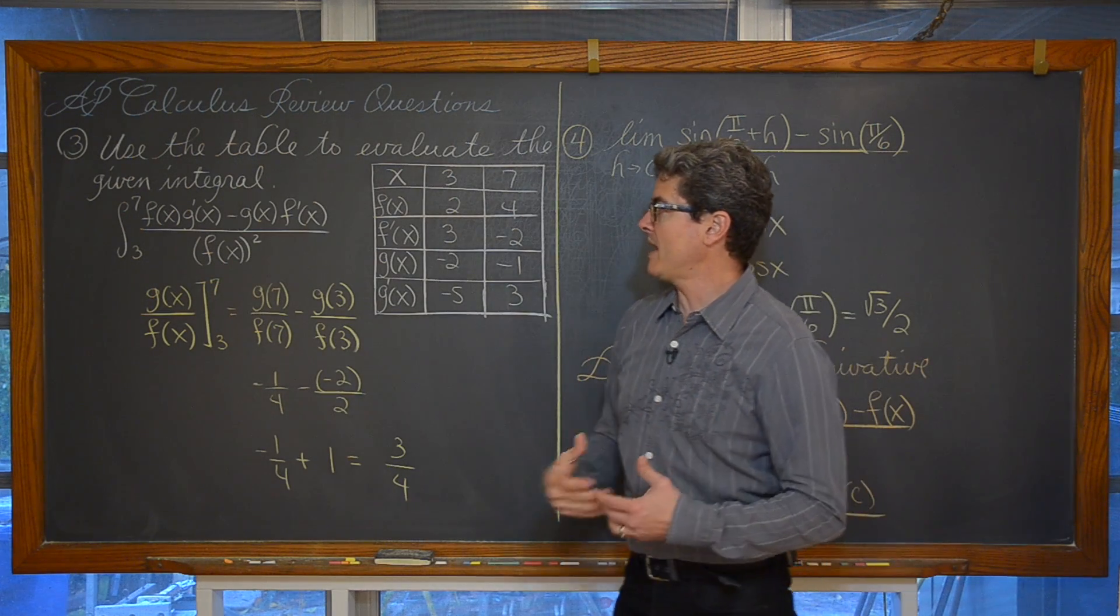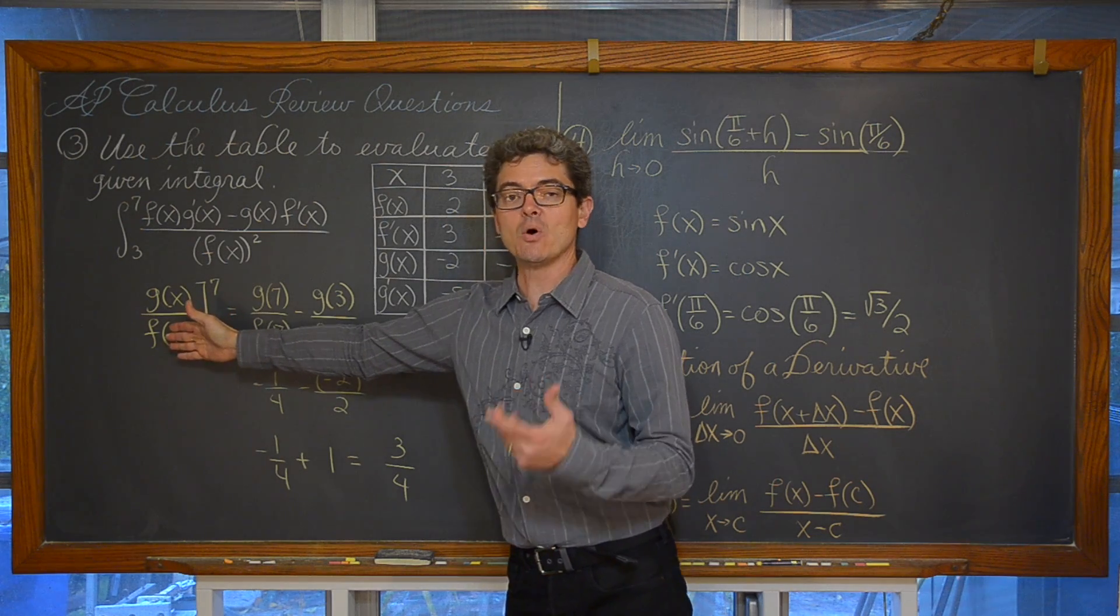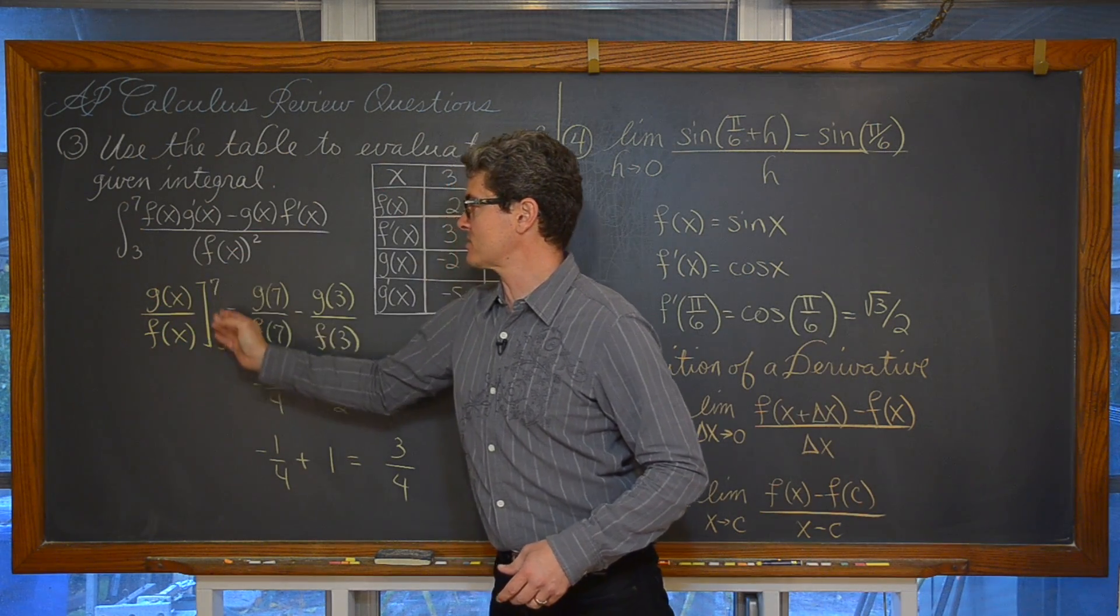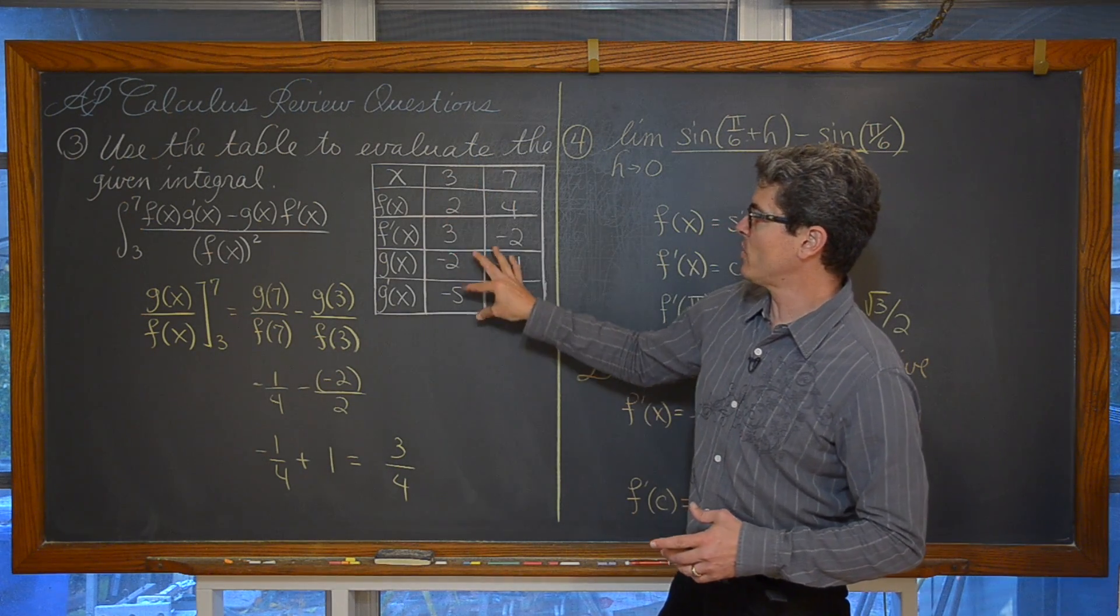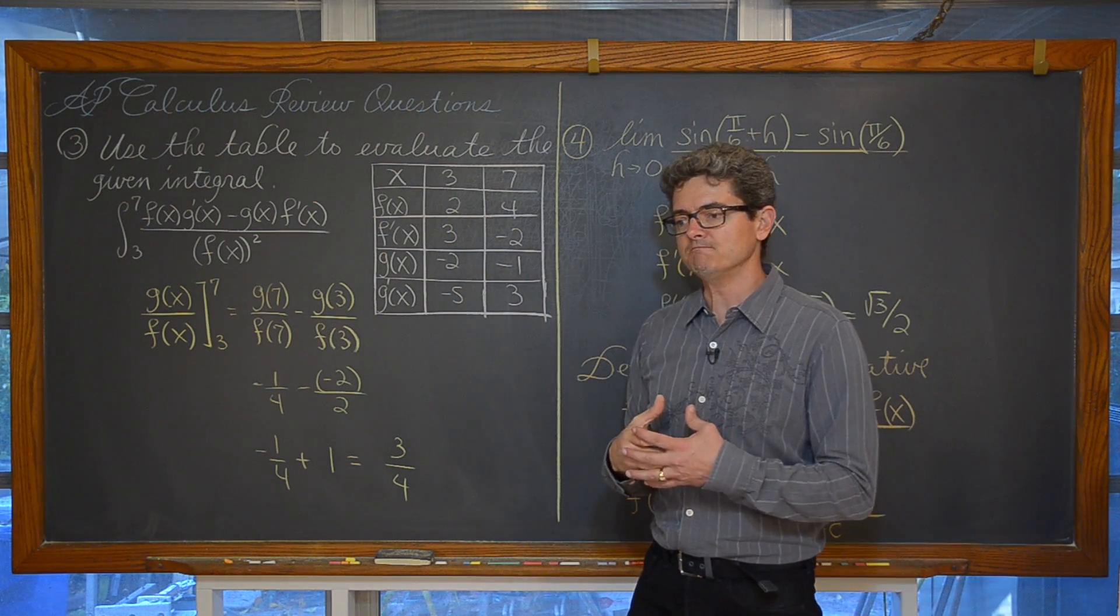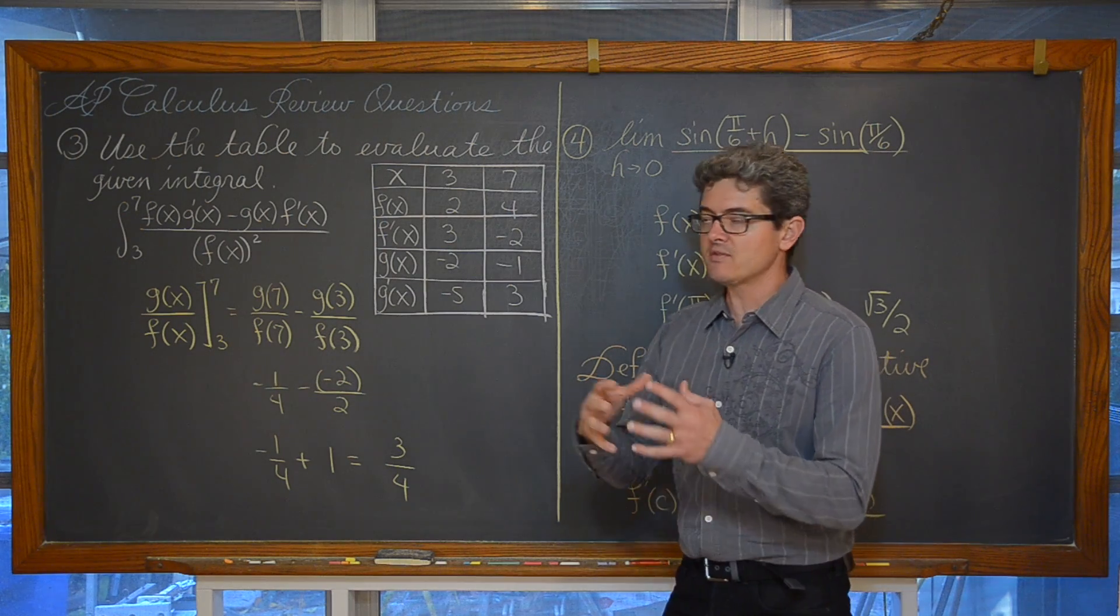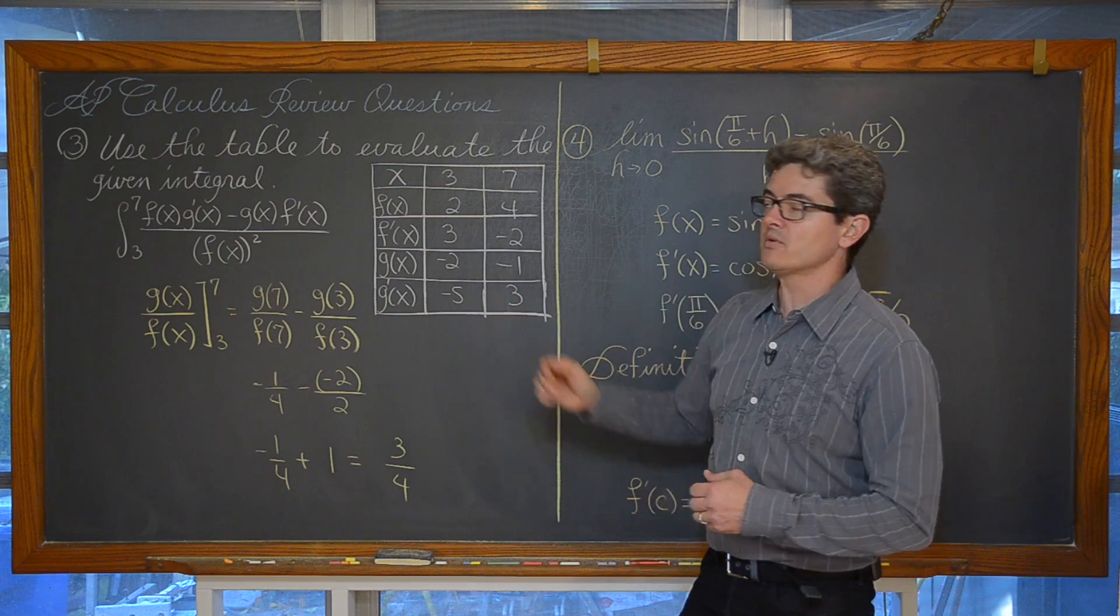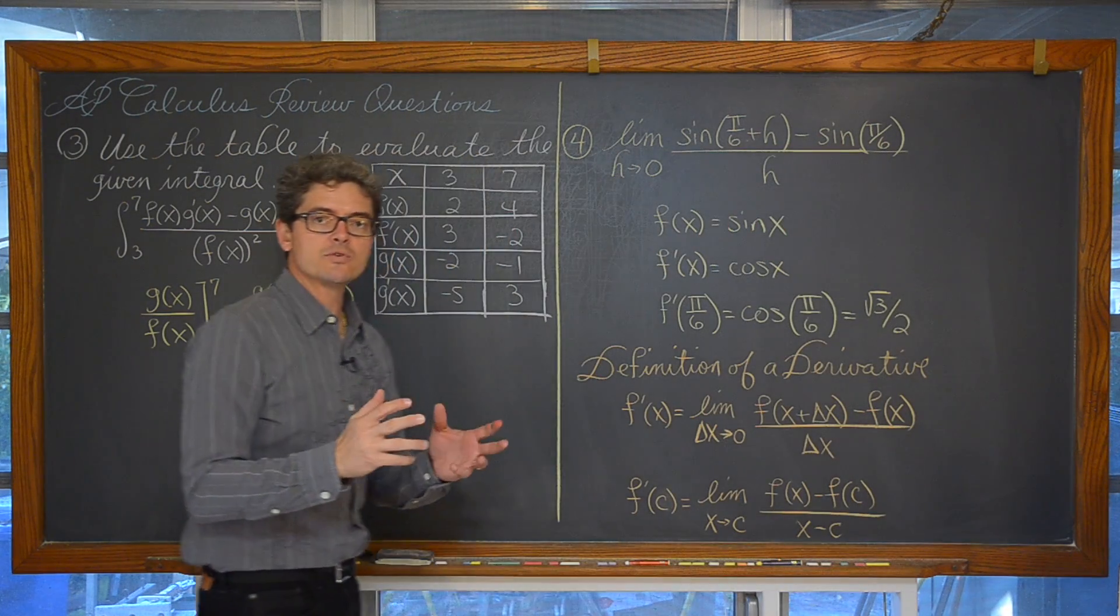That's the quotient rule. When you take the derivative of a quotient, it's low d high so f of x times the derivative of the numerator minus high d low over low low. Recognizing that you're just being asked to sort of integrate that quotient rule, well then you can say this is all equal to g of x over f of x with upper and lower limits of 7 and 3 and then start pulling those values out of the table.